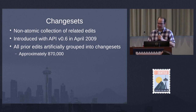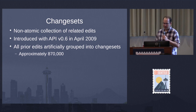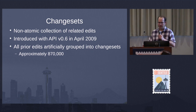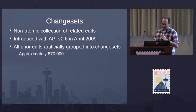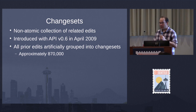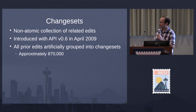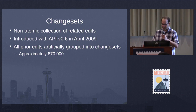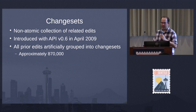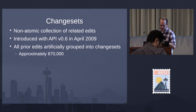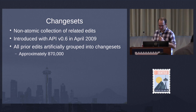Changesets haven't always existed. They were introduced along with API version 0.6. All the edits before then were on their own, so some changesets were created to contain those — about 870,000 of them.